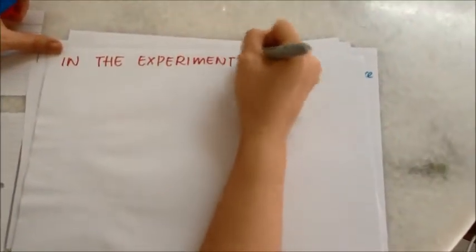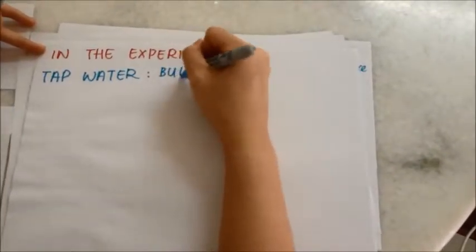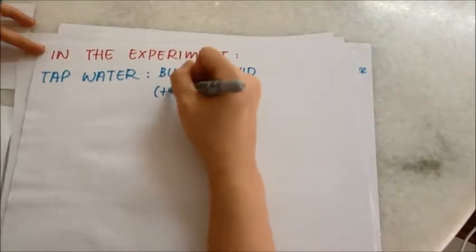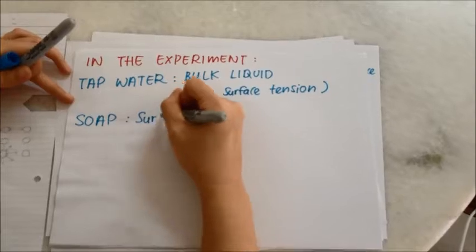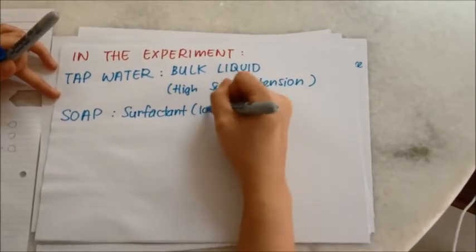Now we are going to explain what happened in the experiment. Tap water is used as the bulk liquid, which has a high surface tension, whereas the soap, acting as the surfactant, has a lower surface tension.